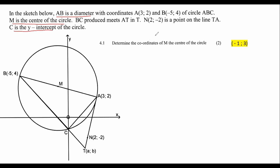Okay, so it says determine the coordinates of M. That's easy. If we have these two coordinates, then we can easily find M by using the midpoint. You guys know how to do this, so I'm going to go very quickly. Midpoint formula: minus 5 plus 3 divided by 2, and then 4 plus 2 divided by 2. If you work that out, you should get negative 1 and positive 3. Easy.